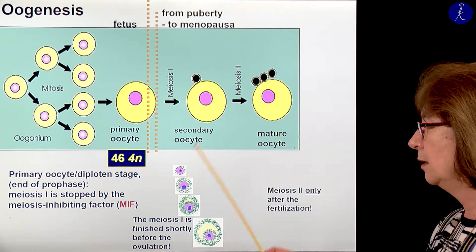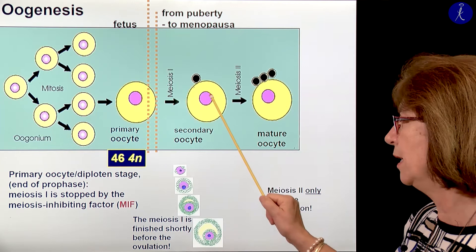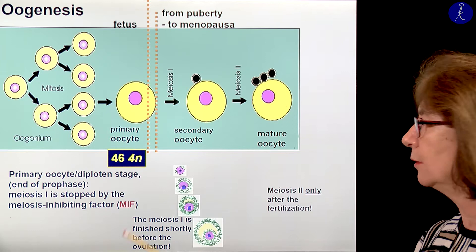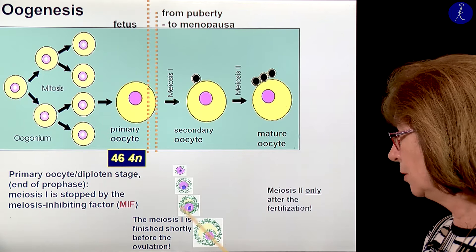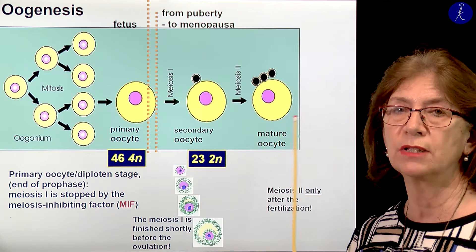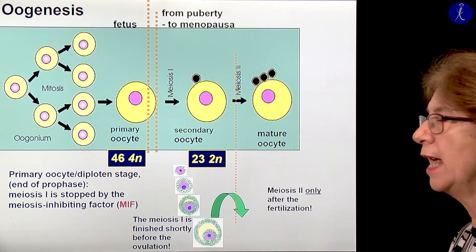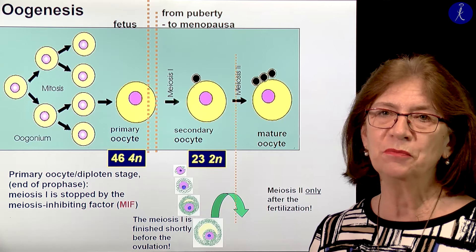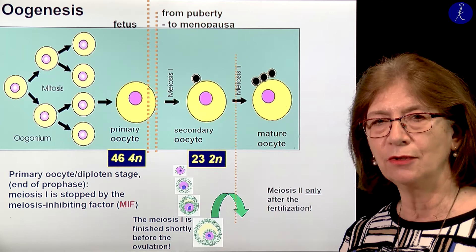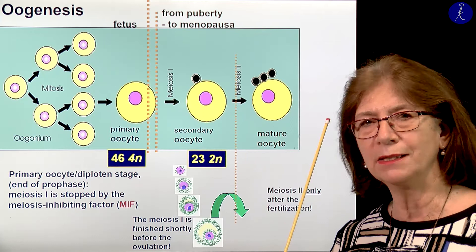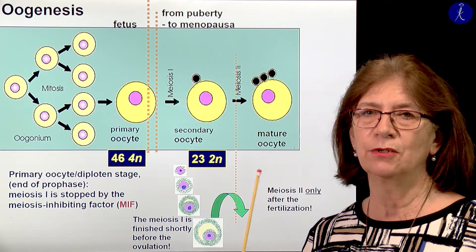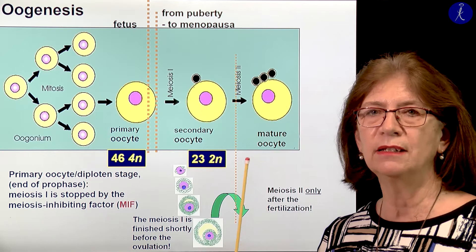This division is asymmetrical: one cell takes most of the cytoplasm and the other is a small cell called the polocyte. The genetic content is the same but it doesn't have cytoplasm. The secondary oocyte is already a haploid cell with 23 chromosomes, but each chromosome has two chromatids. The second meiotic division happens only if this oocyte is fertilized. As many times as a woman was fertilized, that many times she had a second meiotic division — the others never went through it.